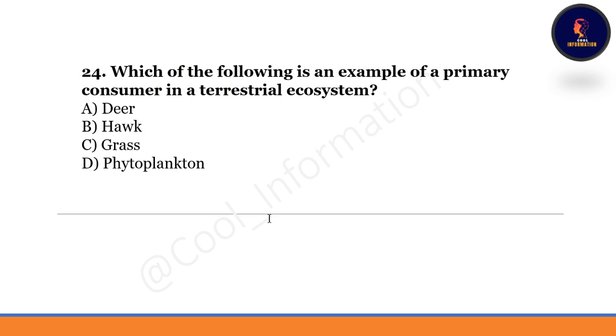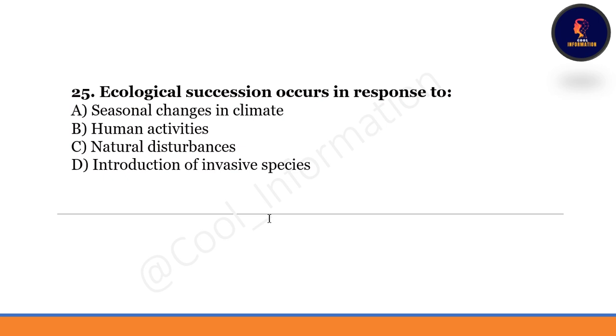Which of the following is an example of primary consumers in a terrestrial ecosystem? Deer is the primary consumer in the terrestrial ecosystem. Option A is correct.